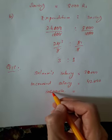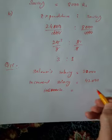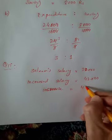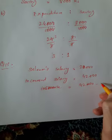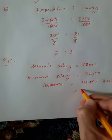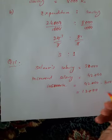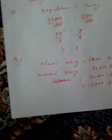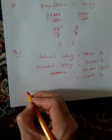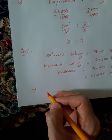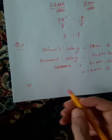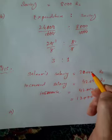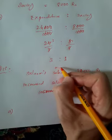The increase is 42,000 minus 30,000, which equals 12,000. Part a asks for the ratio of old salary to new salary.